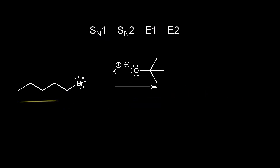For this alkyl halide, we're deciding between SN2 and E2. We have potassium tert-butoxide as our reagent. This looks similar to the previous problem with potassium hydroxide — we have a negative charge on oxygen, so you would think it could act as a strong nucleophile or strong base. But potassium tert-butoxide is sterically hindered because of the large group, and because it's sterically hindered it can't get close enough to act as a nucleophile. So SN2 is out, which means this must be an E2 reaction.